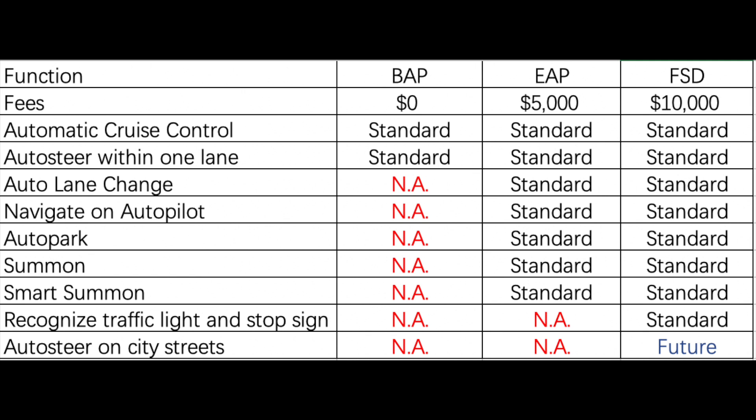I made a table to show you the different functions of autopilot. The first one is basic autopilot — it comes as standard, so it costs nothing. Only two functions are available for BAP. In China, Tesla allowed us to purchase enhanced autopilot for only half the price of full self-driving, which is $5,000. It has much more functions compared with BAP.